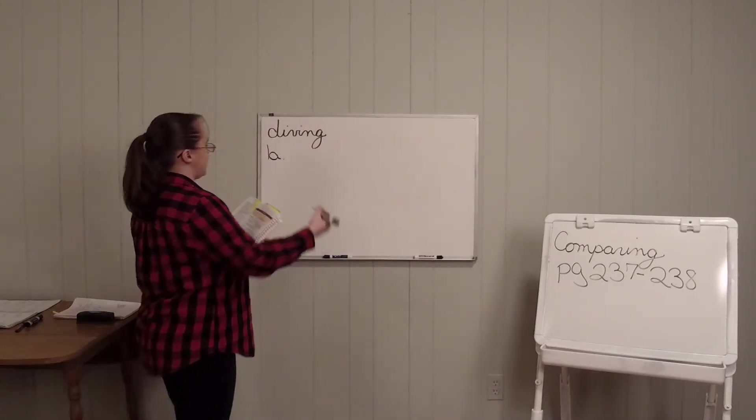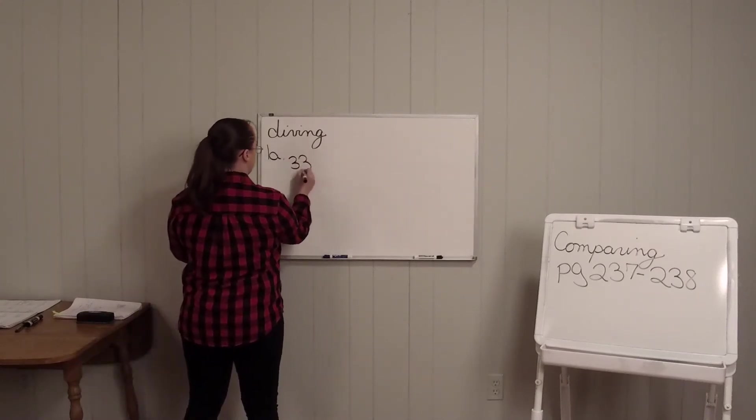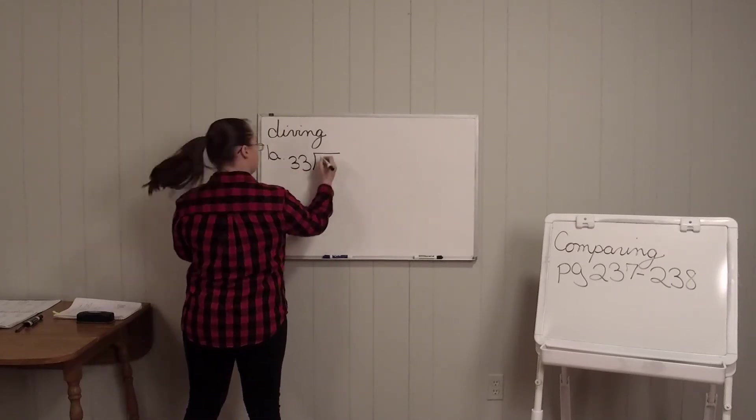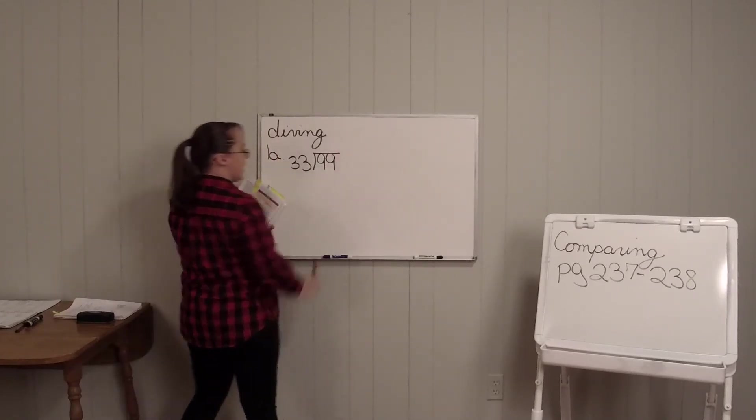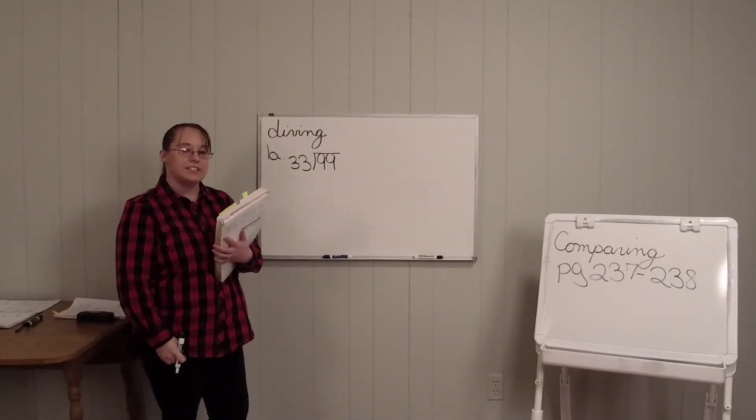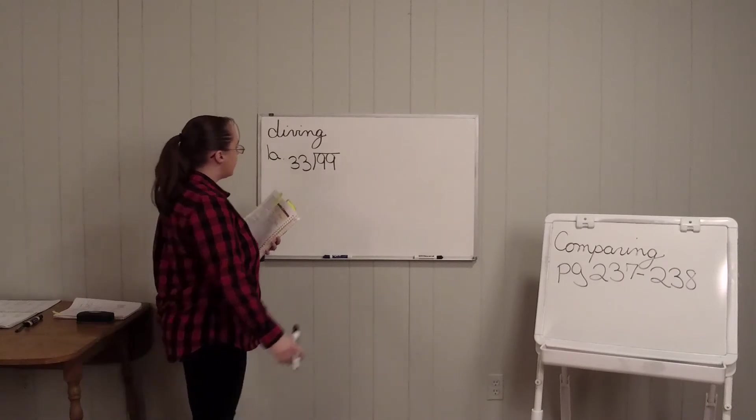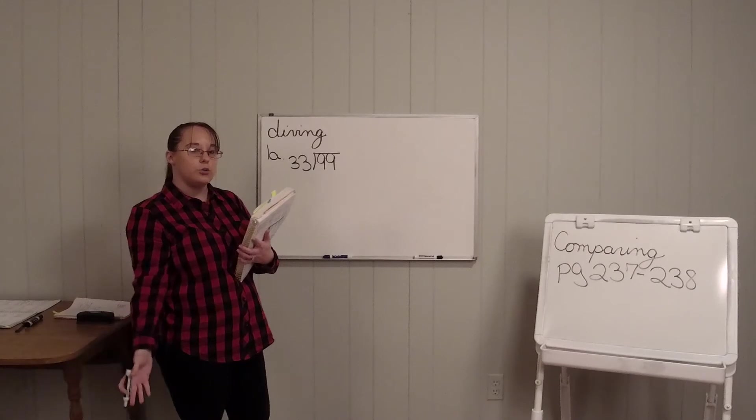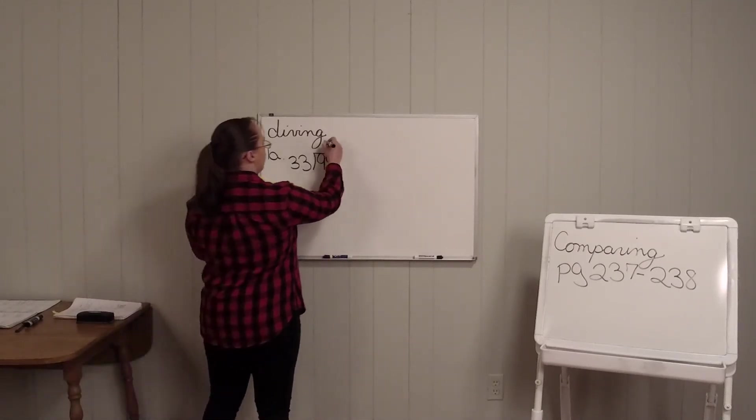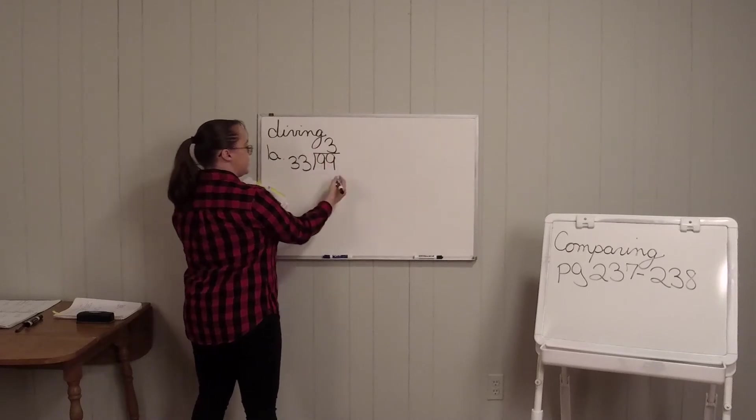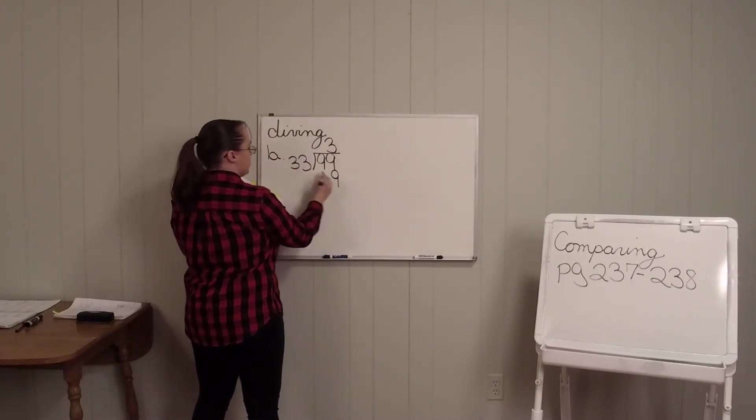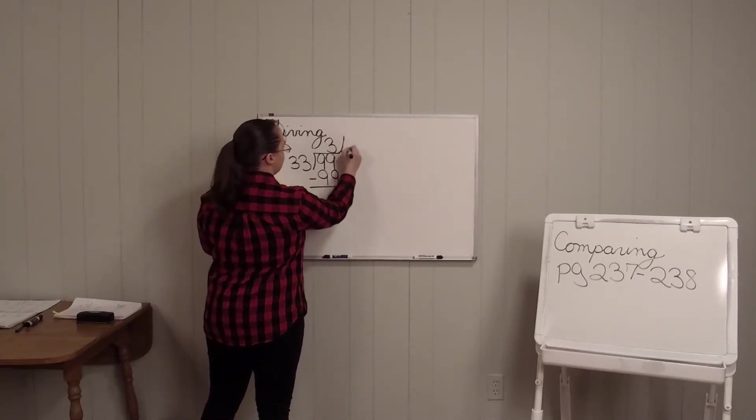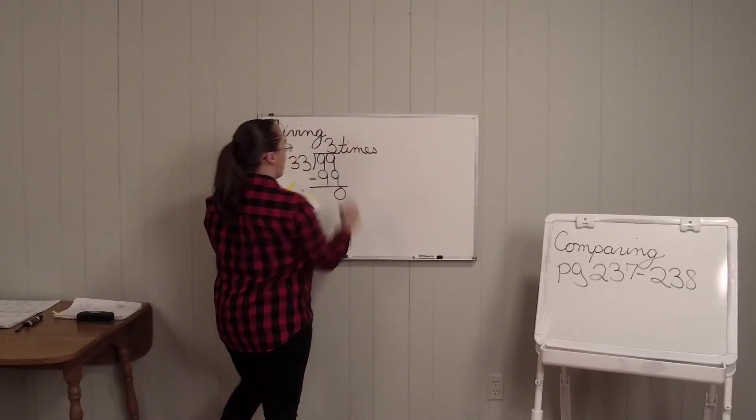So what you're saying is 33 divided by 99. All you're doing is dividing. So you're saying 3 times 33 is 99. 3 times 3 is 9. So how many times it was? 3.